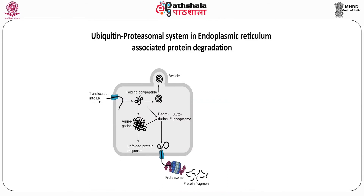The Ubiquitin Proteasomal System also plays a role in Endoplasmic Reticulum Associated Protein Degradation (ERAD). Protein folding is not always 100% efficient — misfolding does happen. If misfolded proteins are allowed to persist inside the cell, they can cause protein aggregation and undesirable consequences. These misfolded proteins create a cellular response known as the Unfolded Protein Response (UPR) in the endoplasmic reticulum. In this response, misfolded proteins are retro-translocated to the cytosol, ubiquitinated, and then destroyed in the proteasome.